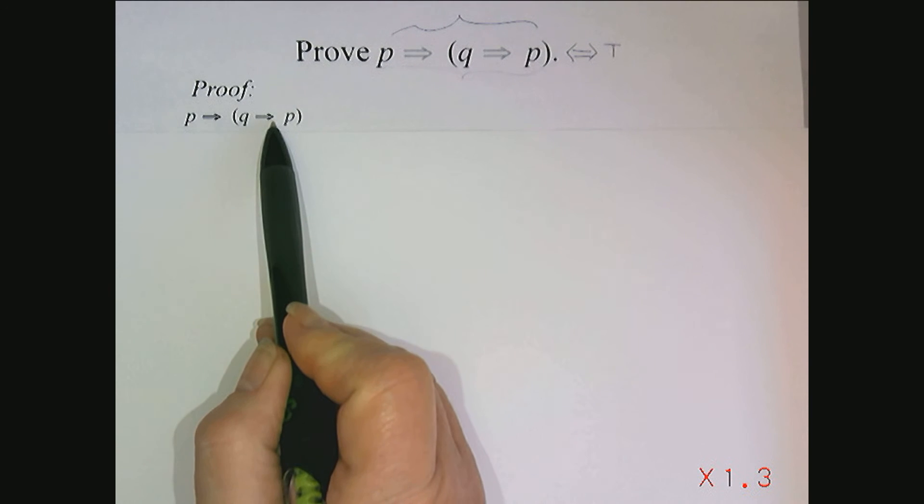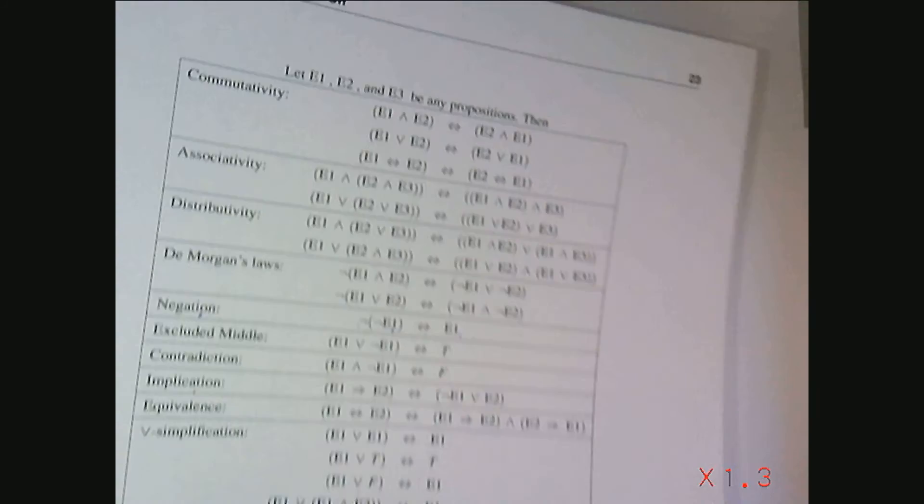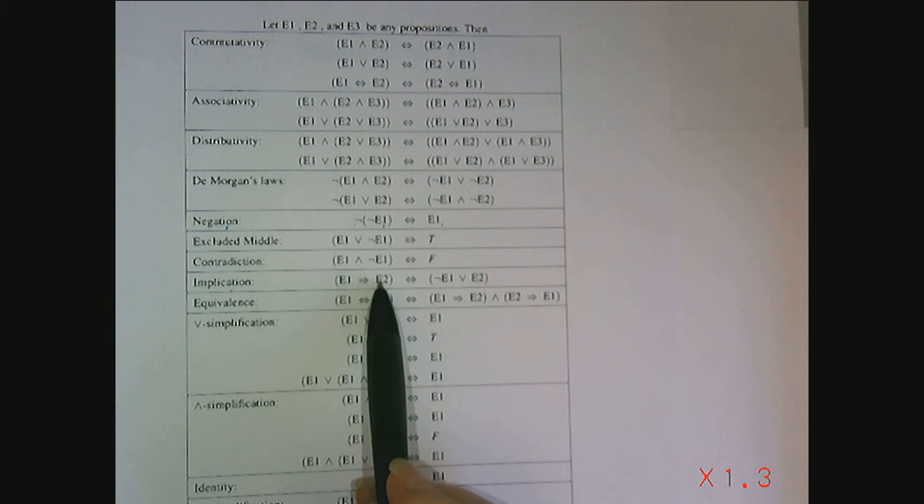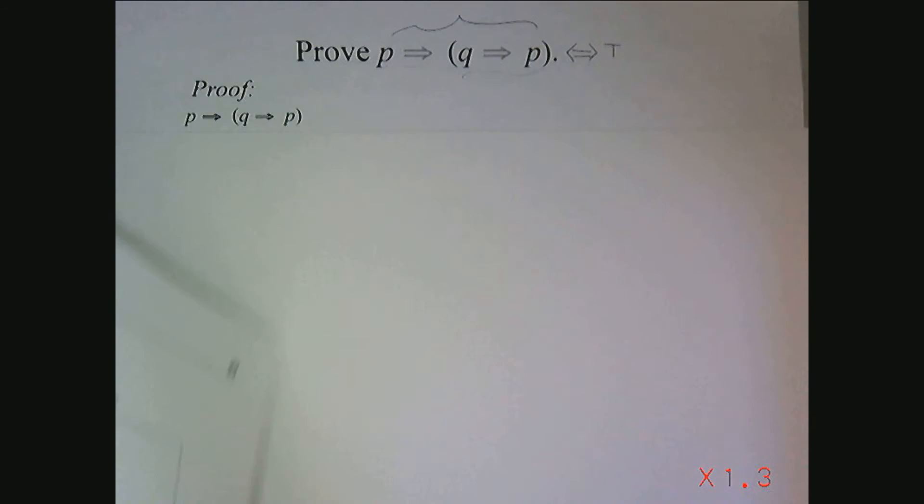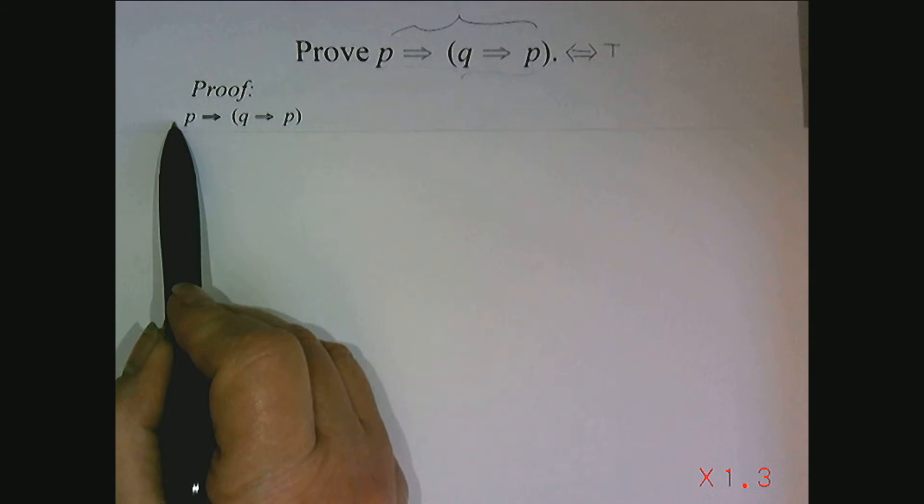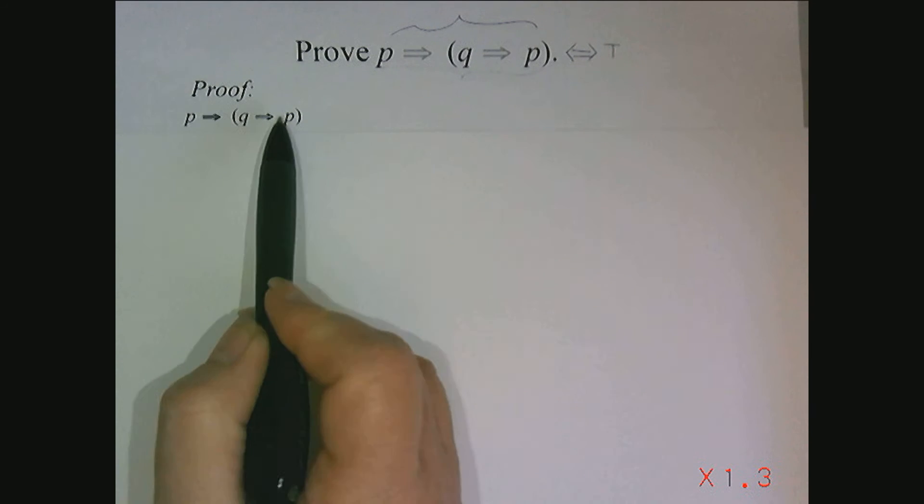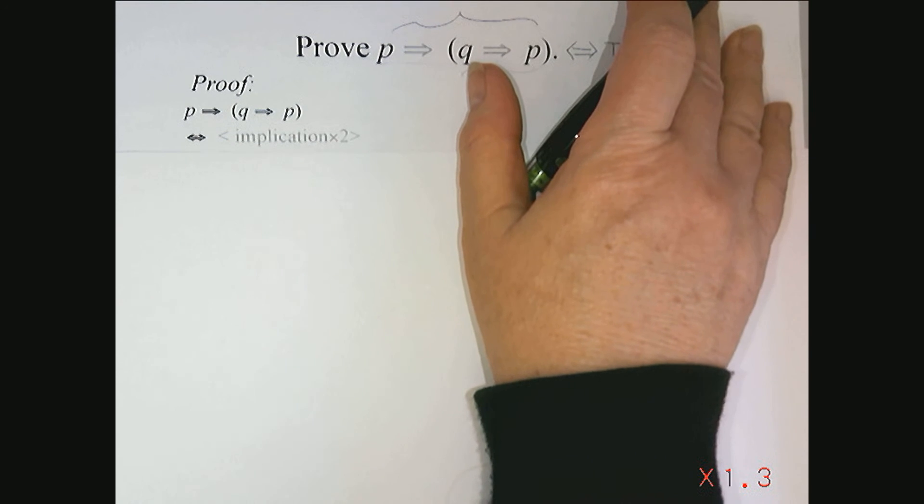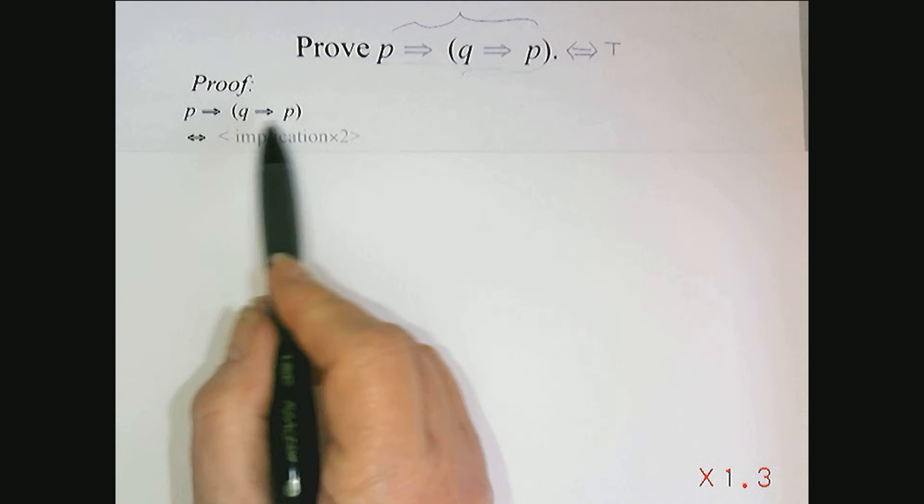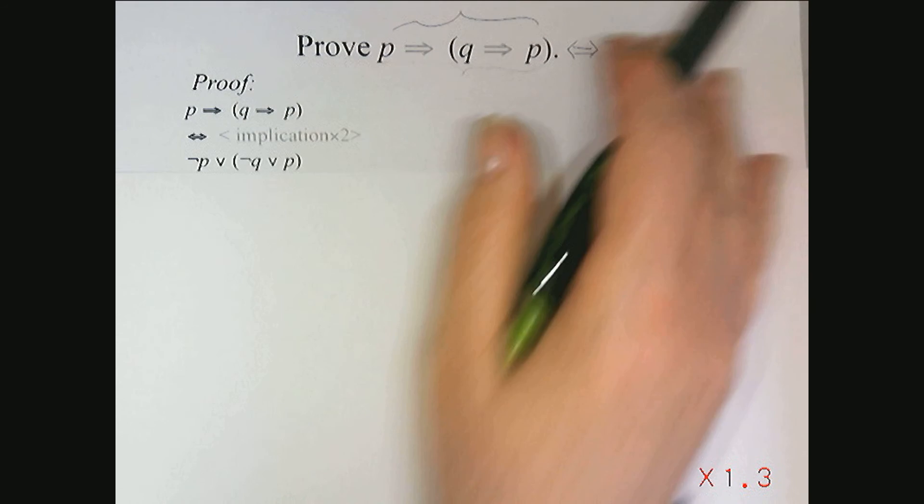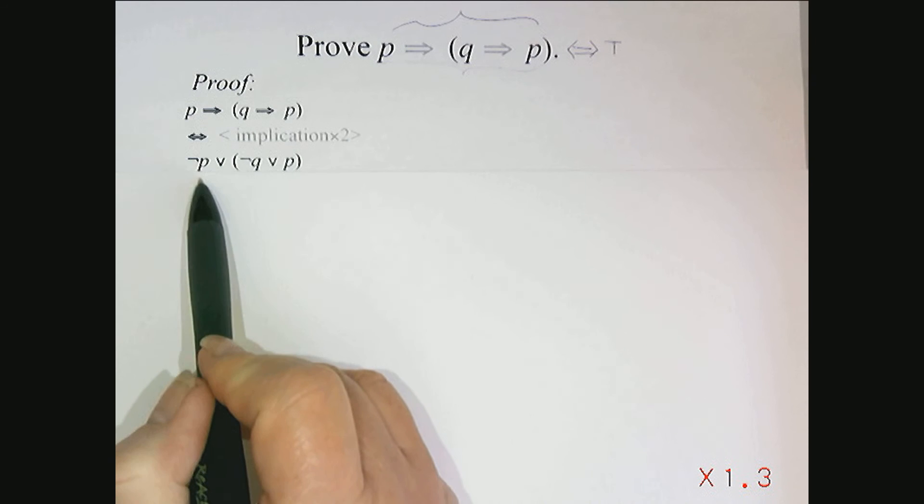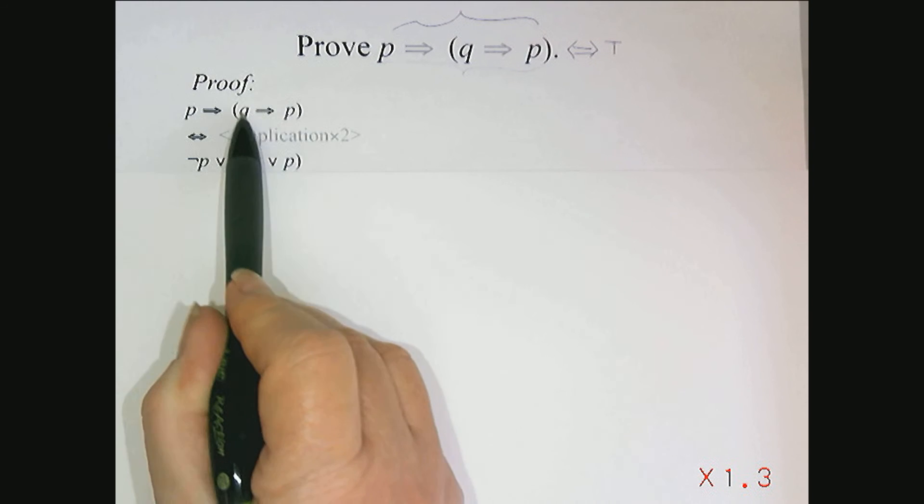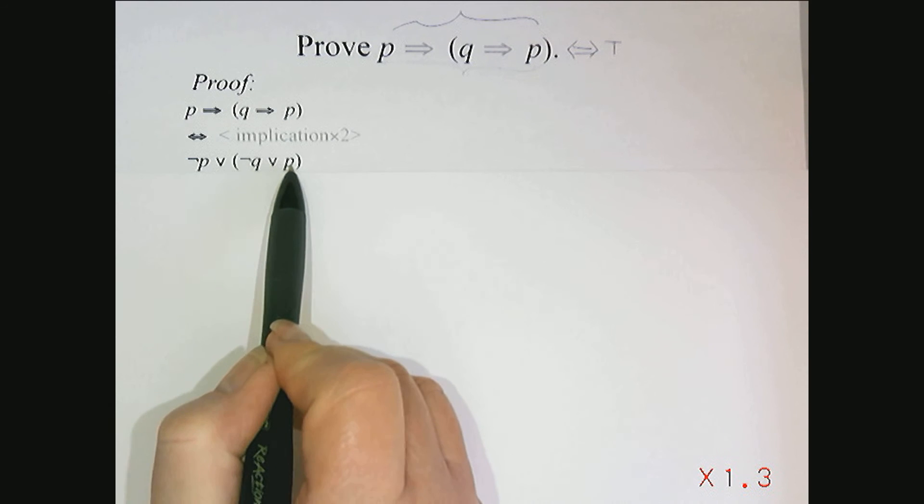I have implications here, two of them. So I'm going to apply the law of implication. And I'm going to write this as not P or this expression. And in fact, I'm going to use law of implication twice here. And I'm going to say that this predicate is equivalent to not P or this expression, which is not Q or P.